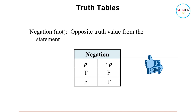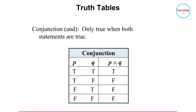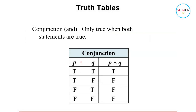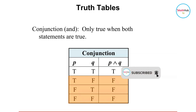This is the truth table for negation. For conjunction — when you say conjunction, that means an AND statement. This is the truth table for conjunction. This is only true when both statements are true. If either one of the statements is false, or both statements are false, the conjunction statement is false.